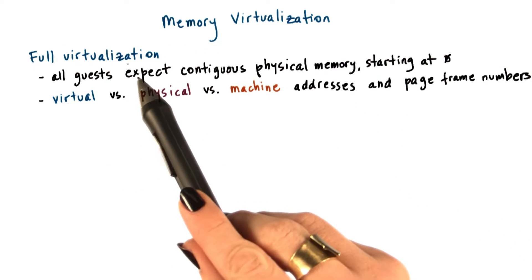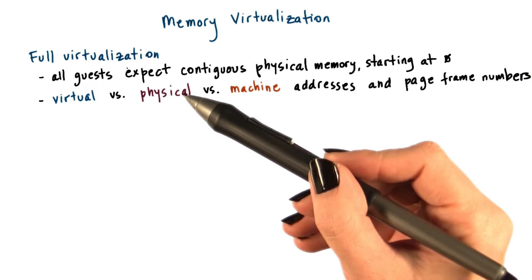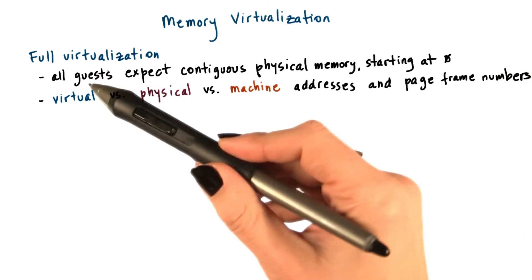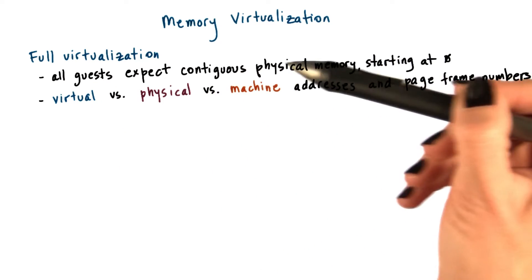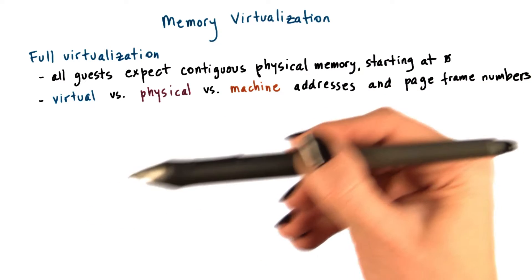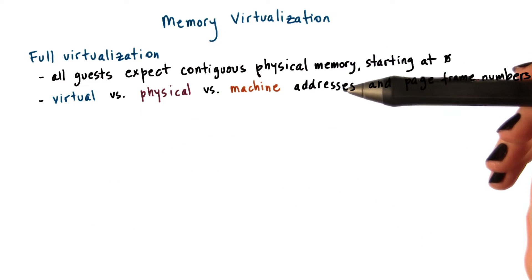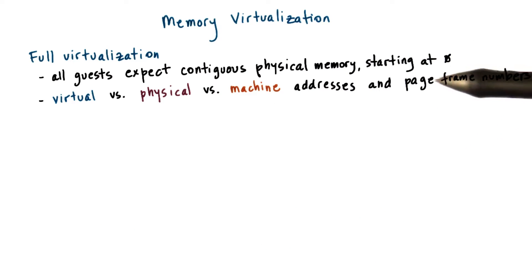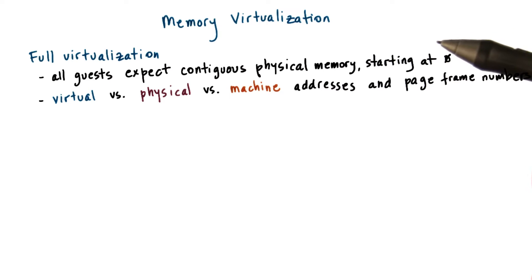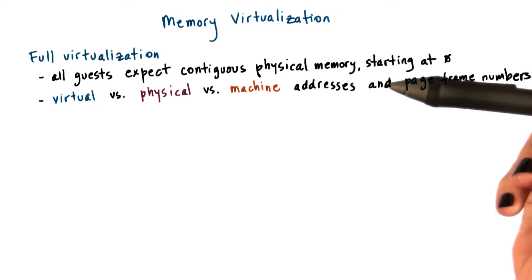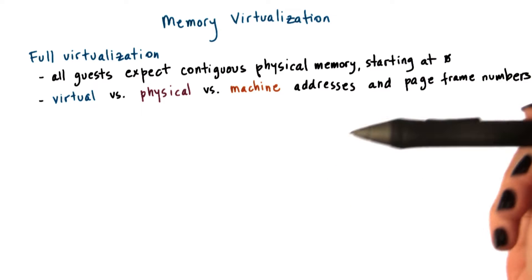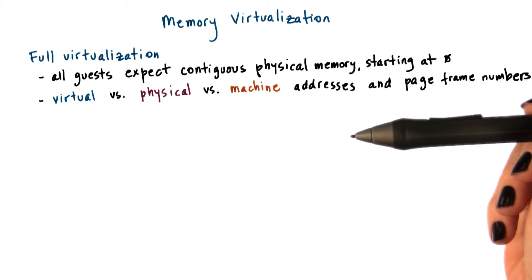For full virtualization, a key requirement is that the guest operating system continues to observe a contiguous linear physical address space that starts from physical address zero. This is what an operating system would see if it actually owned the physical memory and ran natively on physical hardware.